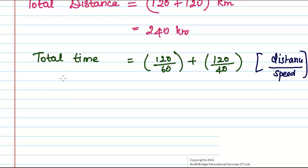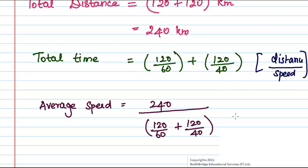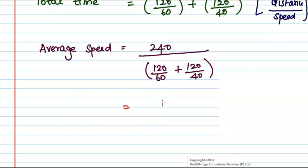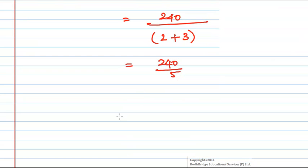Now let us substitute the total distance and total time values into the formula. Average speed equals 240 kilometers divided by (120/60 plus 120/40). On simplifying, we get 240 divided by (2 plus 3), which gives 240 divided by 5, equal to 48 kilometers per hour.